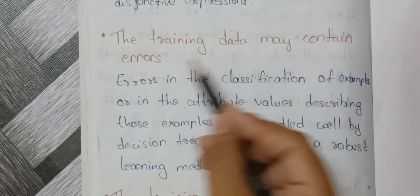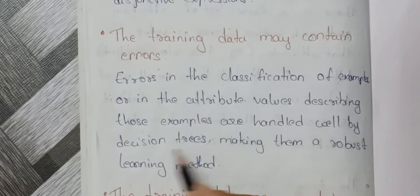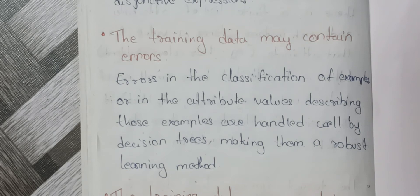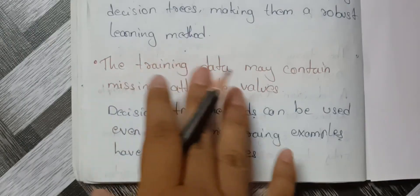Fourth characteristic: the training data may contain errors. Errors in the classification of examples or in the attribute values describing those examples are handled well by decision trees, making them a robust learning method. This means decision trees are robust — unbreakable, flexible, and manageable — when training data contains errors or mistakes in attribute values.